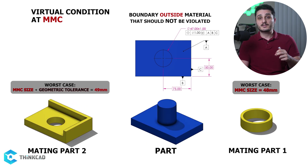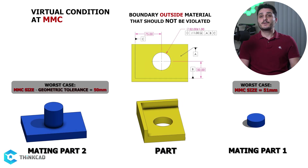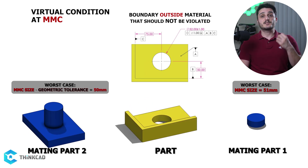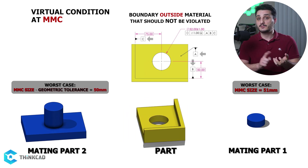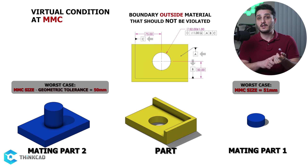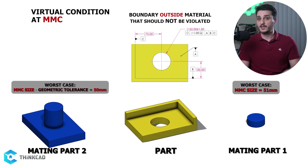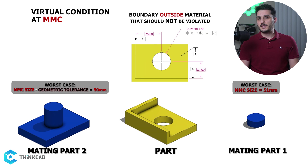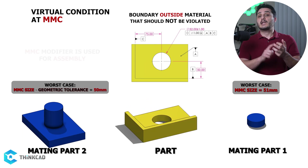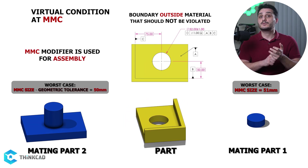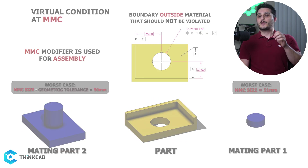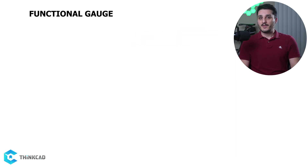We have the same case with the hole part. Its virtual condition of 50mm makes sense when its mating part has to touch datums A, B, and C, which means we have to take position tolerance into account. Just remember MMC is used for assemblies due to its nature. Now let's see what a functional gauge is — also known as a go gauge.